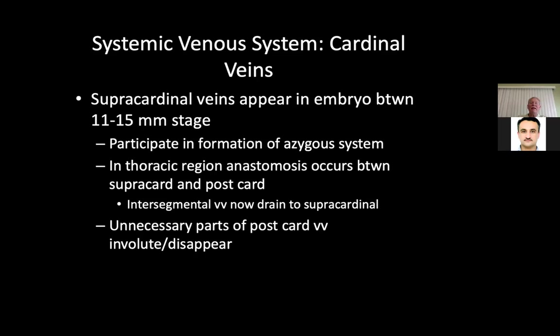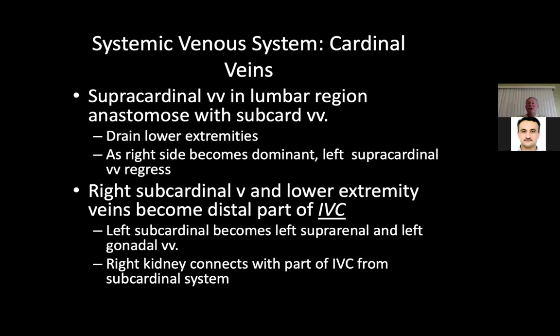The supracardinal veins appear in the embryo between the 11 and 15 millimeter stage and participate in the formation of the azygous system. In thoracic regions, anastomoses occur between the supracardinal and postcardinal segments, and the intersegmental vein drains to the supracardinal vein. Unnecessary parts of the posterior cardinal vein involute and disappear. The supracardinal veins in the lumbar region anastomose with the subcardinal vein and drain the lower extremities. If the right side becomes dominant, the left supracardinal vein regresses.